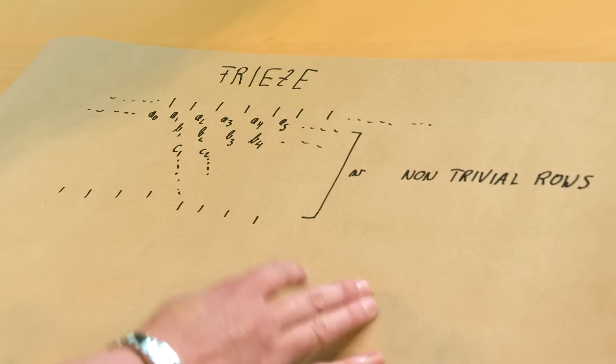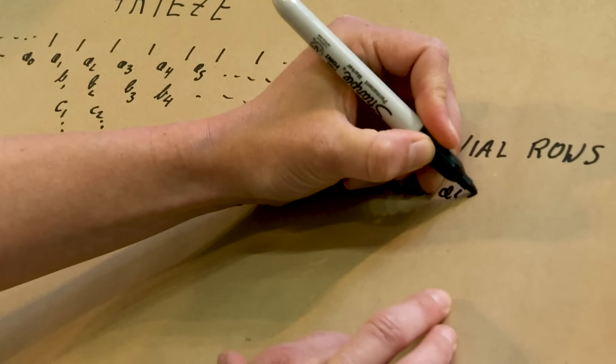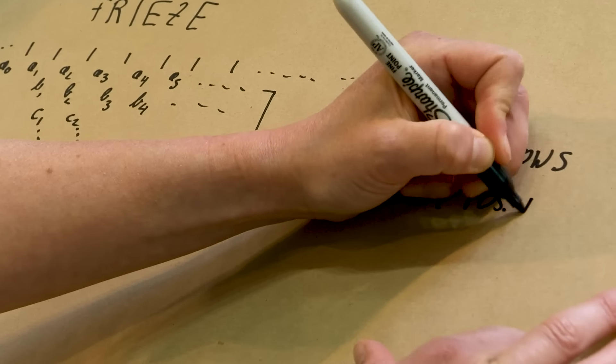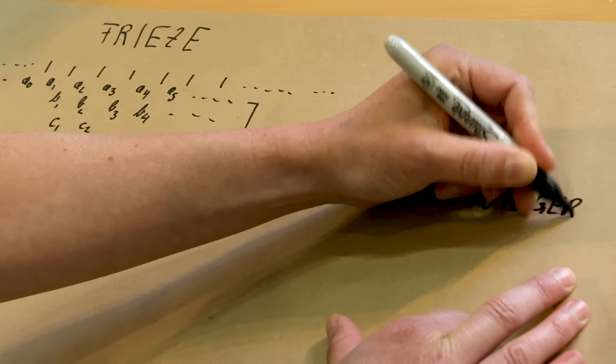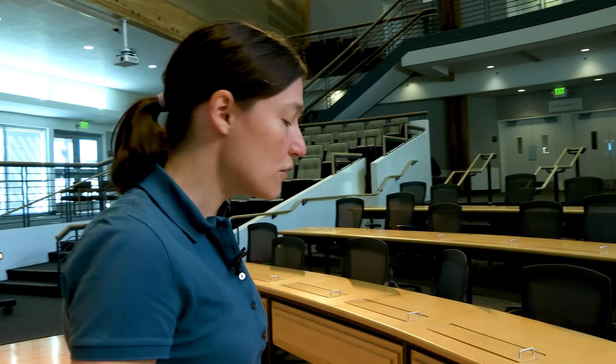You might think you can put any numbers in here, but actually that's not true. I want specific conditions on these numbers. All entries are positive integers — so just 1, 2, 3 and so on, nothing else. No zeros. That's very important — no zeros. And they also have a rule which is called the diamond rule.